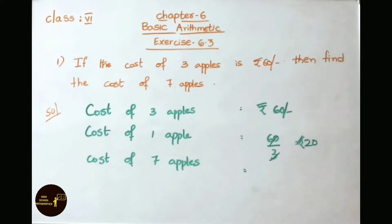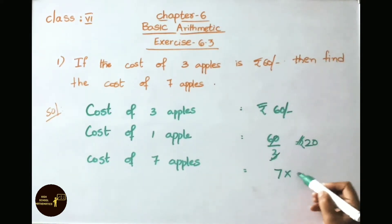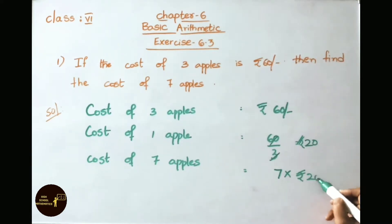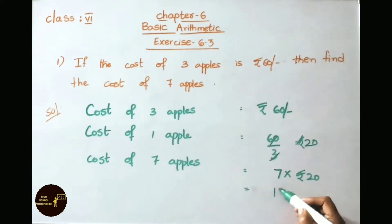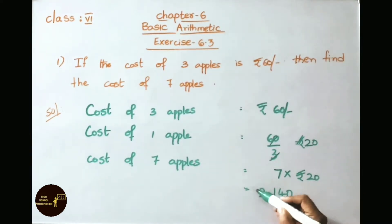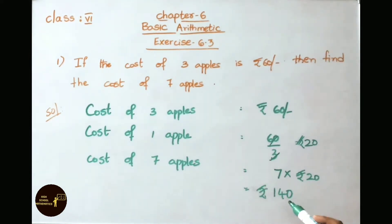Now let us find the cost of 7 apples: 7 into 20 rupees. 7 twenties are 140. Therefore, cost of 7 apples is 140 rupees.